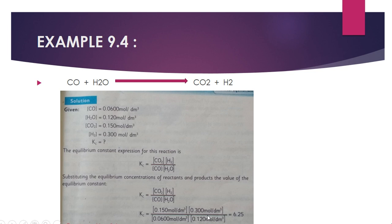So by putting the values in the square brackets, you have to calculate them and the answer is 6.25. And here you can see no unit. Why?